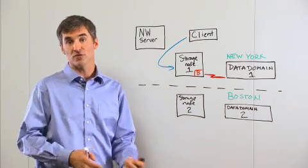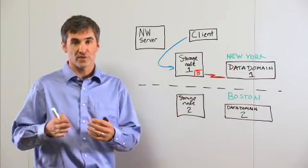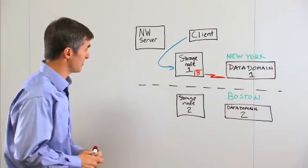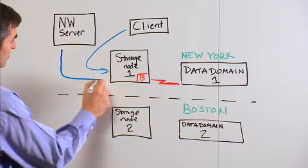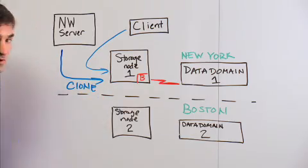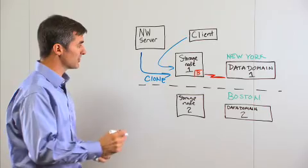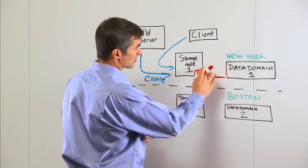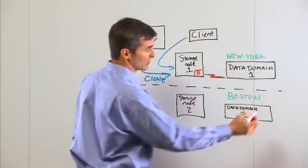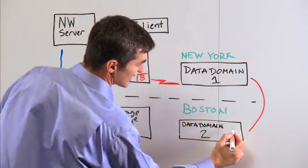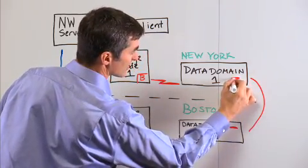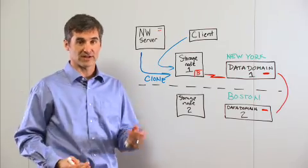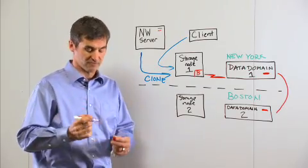Let's talk about how Networker fully manages the replication process. With the mature Networker cloning functionality, we have the ability to create copies leveraging the Data Domain replication on the back end. The Networker server, based on a schedule that you create, requests a clone copy from the storage node. The storage node then tells the Data Domain system to create a clone, which creates a replicated copy out to a secondary site — from the primary copy to the secondary copy, fully indexed inside the Networker server catalog. So you have the ability to have multiple copies fully tracked inside the Networker catalog and fully recoverable from either one.